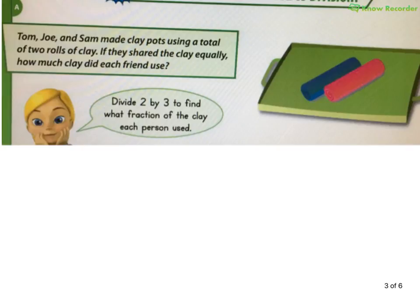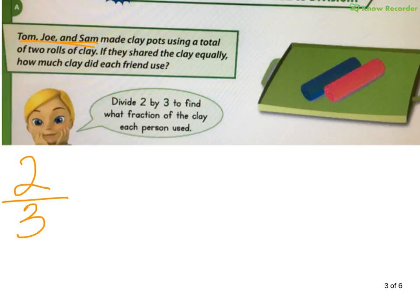Let's take a look at this next example — it's got a little bit harder. Tom, Joe, and Sam made clay pots using a total of two rolls of clay. Thinking about what I have: I have two rolls of clay, shared amongst three people. They want to know, if each uses the same amount, how much is each going to use? That's actually the answer. And by the way, it would also look like this: two divided by three.